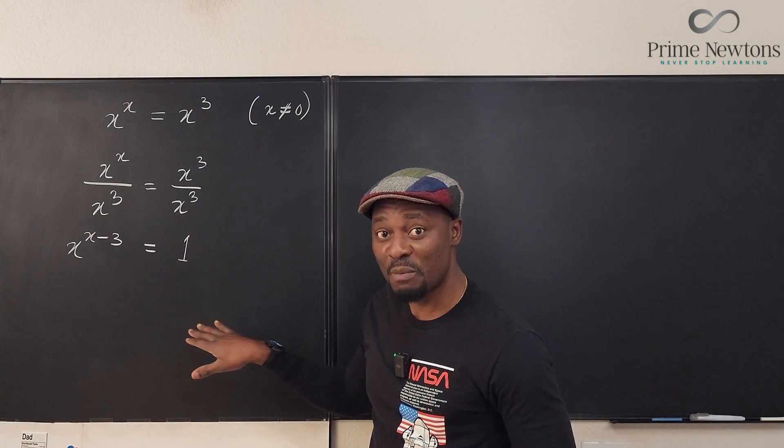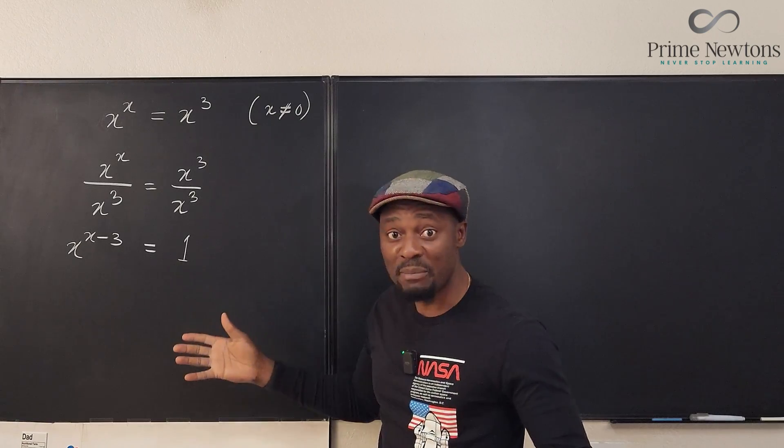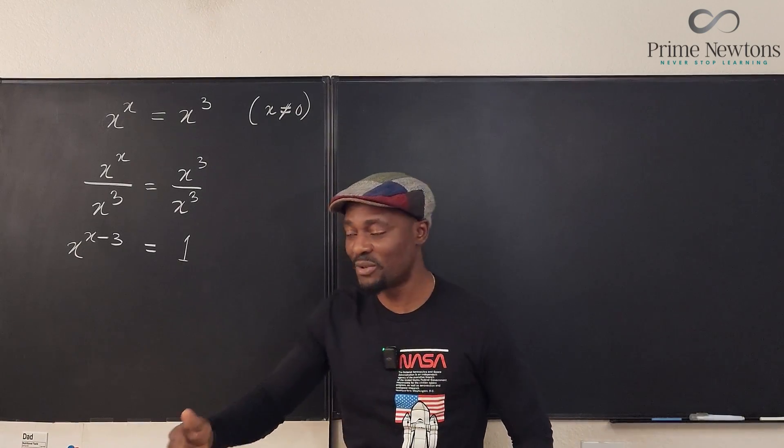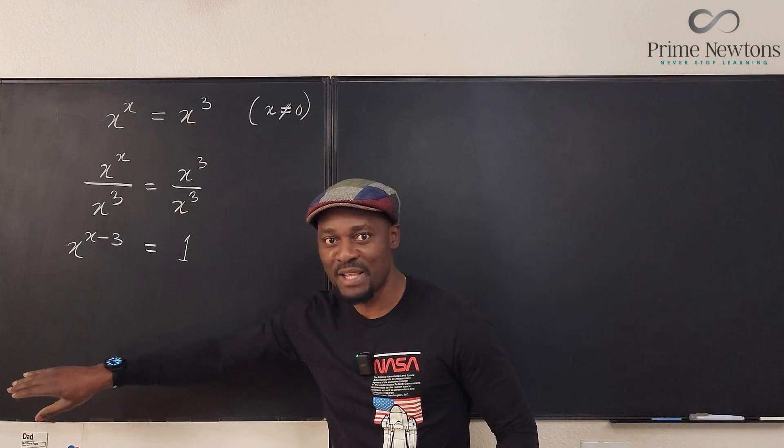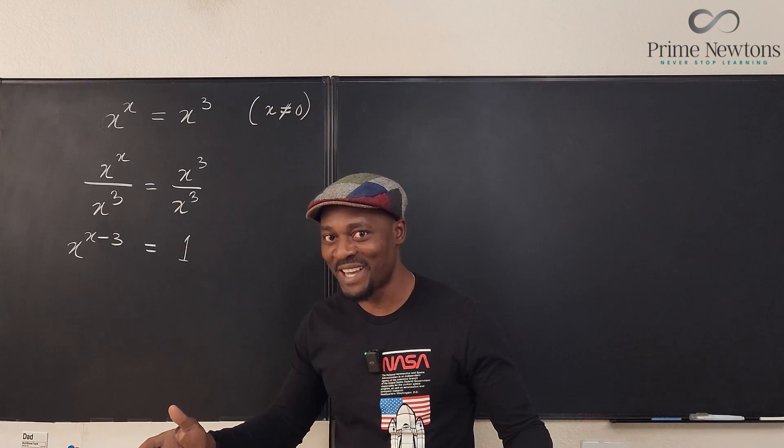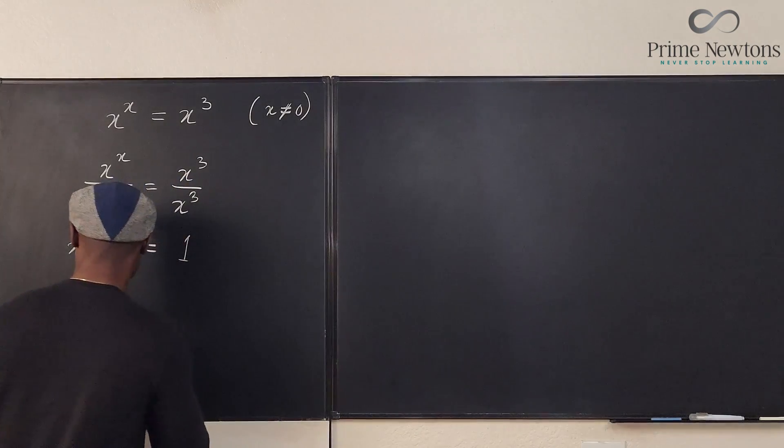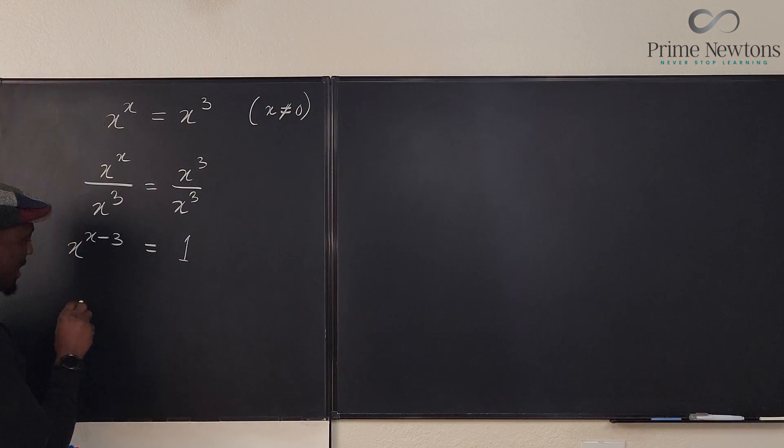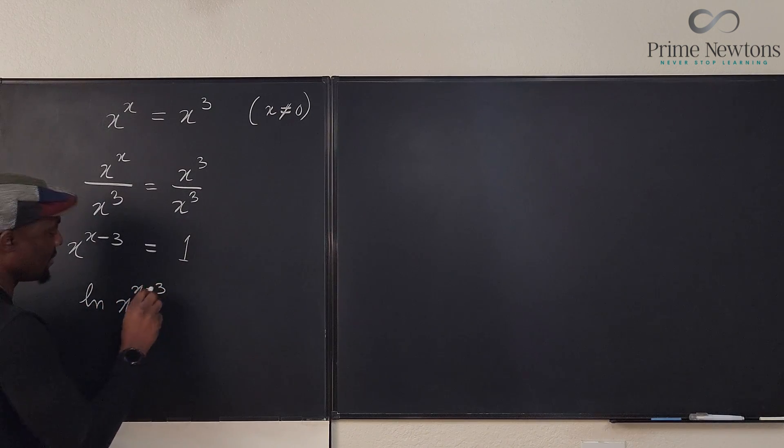So now this is going to look a lot easier once you see what we're about to do next. Well remember, when you have an exponential equation you want to bring down the exponent by taking the natural log of both sides. So if I take the natural log of this I get ln of x to the x minus 3 will be equal to ln of 1.